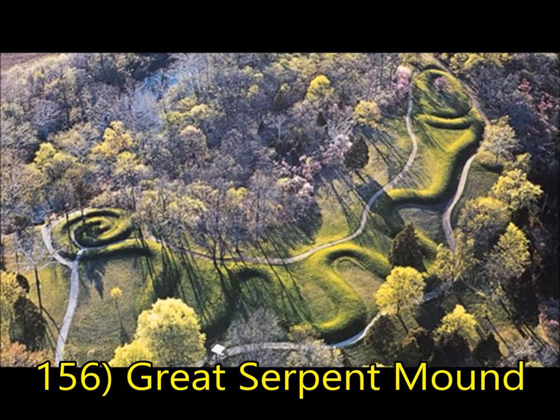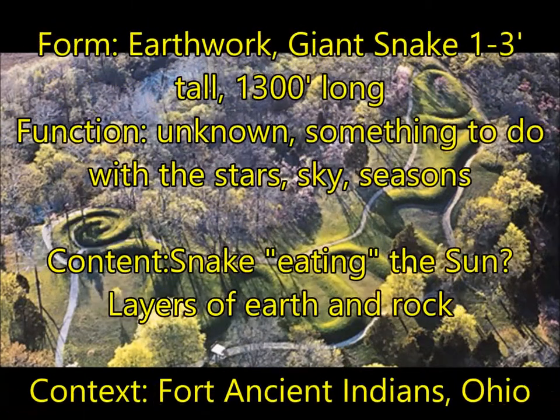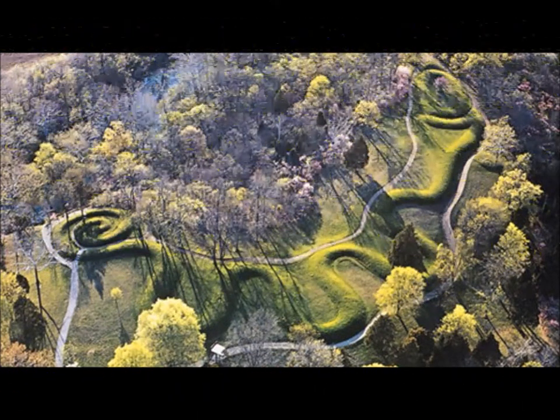Next is the Great Serpent Mound, and the most important vocabulary term is earthwork. An earthwork is a piece of art created using the natural environment around it. This one is in the form of a giant snake — it reaches one to three feet high and 1,300 feet long. The function is generally unknown, but we know it has something to do with the stars, the sky, the seasons, and the sun. For content, you can put a snake eating the sun. For context, this is in Ohio and was made by the Fort Ancient Indians.